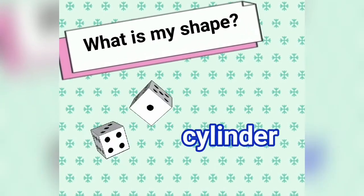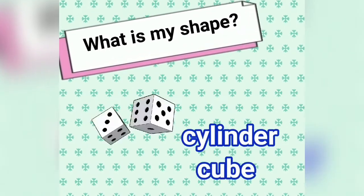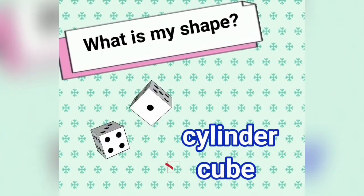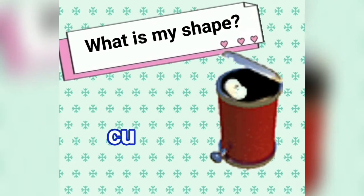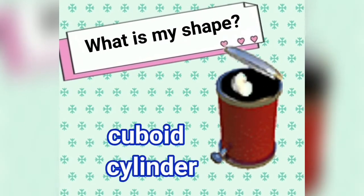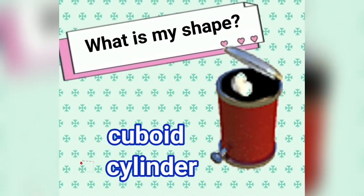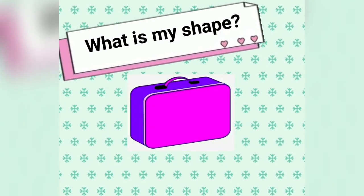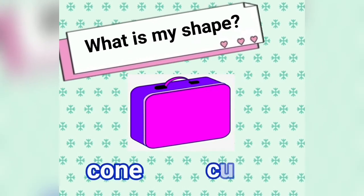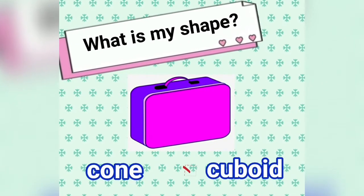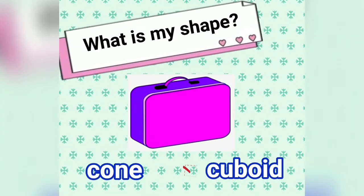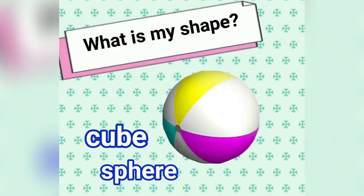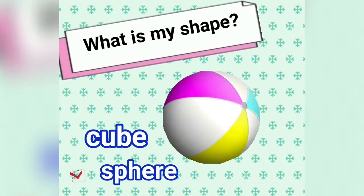What is my shape — cylinder or cube? I am a cube. What is my shape — cuboid or cylinder? You're right, I'm a cylinder. What is my shape — cone or cuboid? I am a cuboid. What is my shape — cube or sphere? I am a sphere. Great.